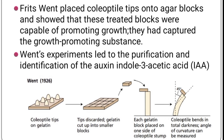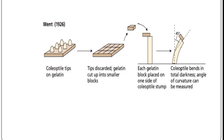Fritz Went placed coleoptile tips onto agar blocks and showed that these treated blocks were capable of promoting growth — they had captured the growth-promoting substance. Went's experiments led to the purification and identification of the auxin indole-3-acetic acid. In 1926, Went showed that the active growth-promoting substance can diffuse into a gelatin block. He also devised a coleoptile bending assay for quantitative auxin analysis.